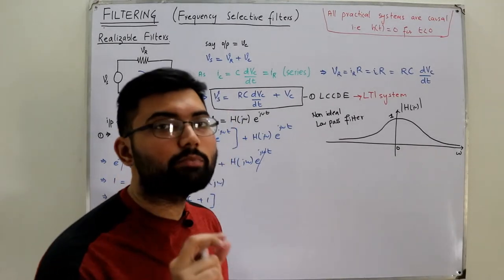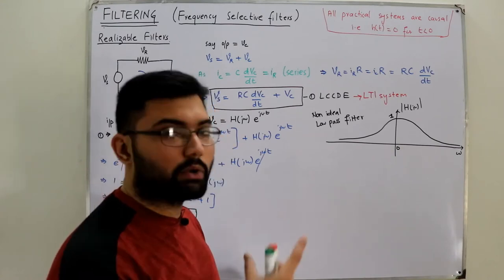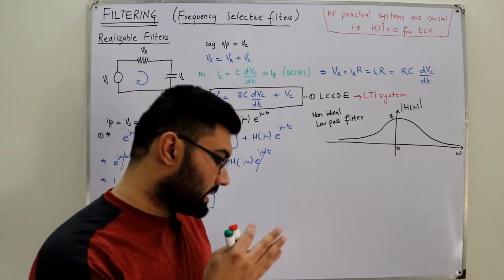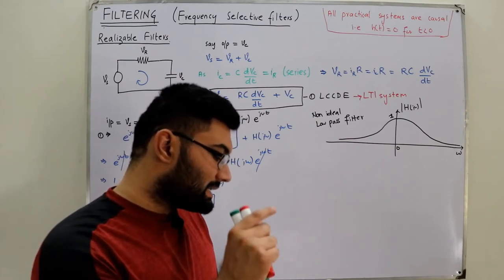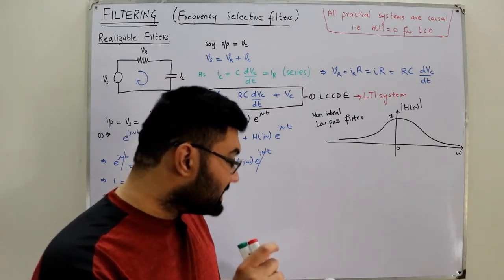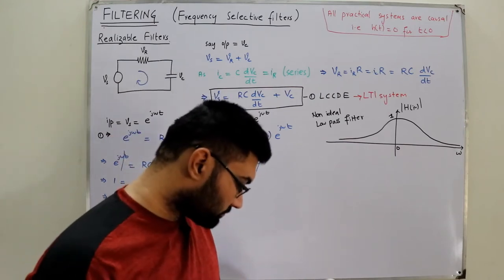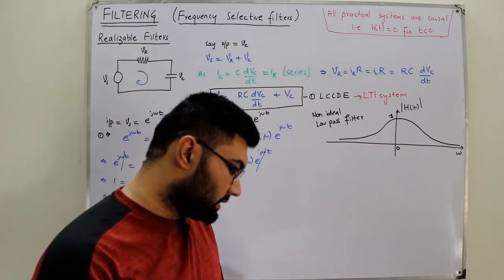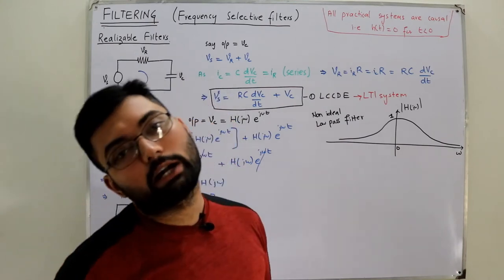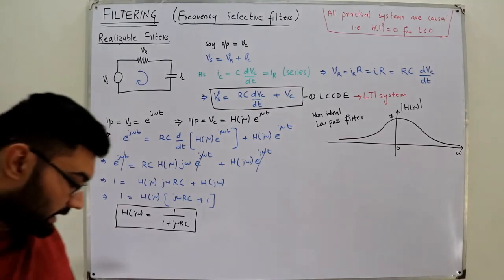From the book: for frequencies near ω = 0, H(jω) ≈ 1. For larger values of ω, positive or negative, the frequency response is considerably smaller and steadily decreases as ω increases. Thus, this simple RC filter with voltage across the capacitor as output is a non-ideal low pass filter.